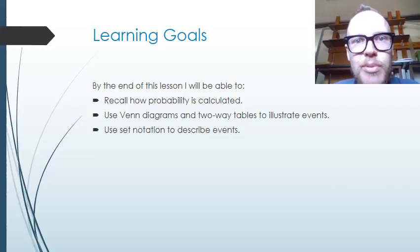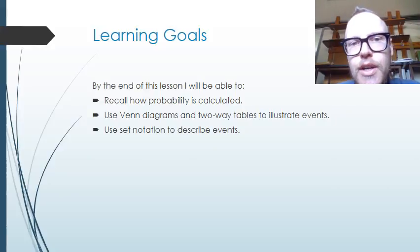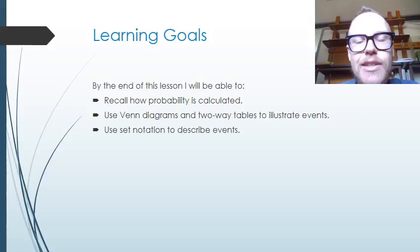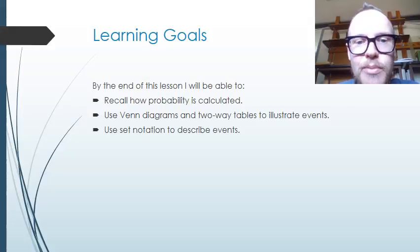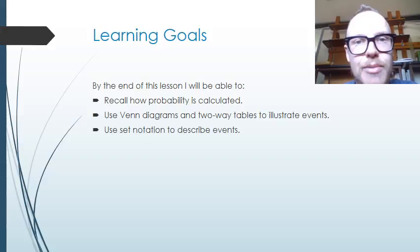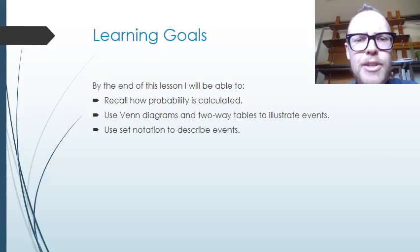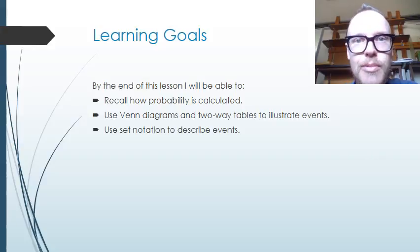Today we're going to look at probability and set notation. The learning goals for this lesson are that we'll be able to recall how probability is calculated, use Venn diagrams and two-way tables to illustrate events, and we're going to be able to use set notation to describe events.